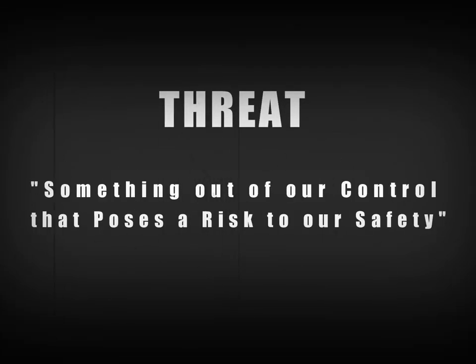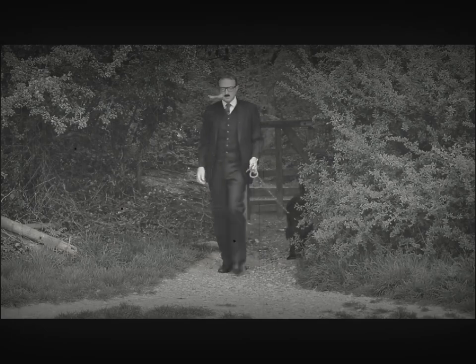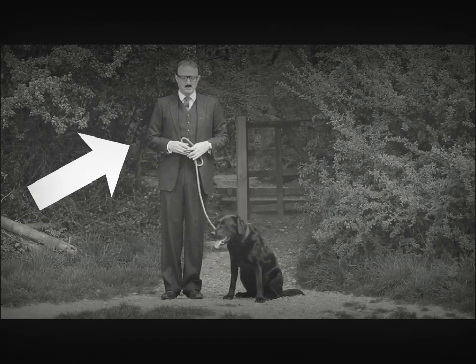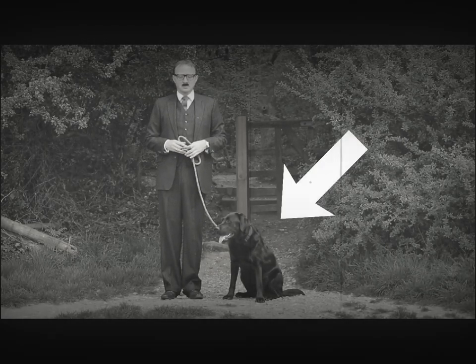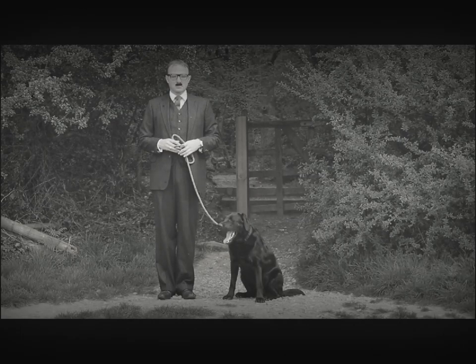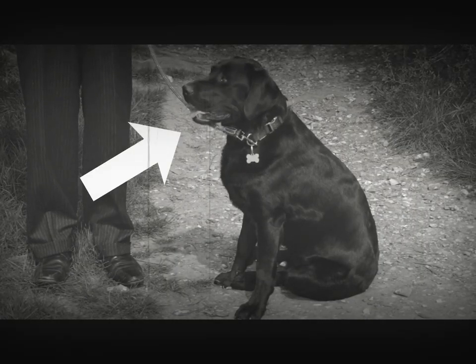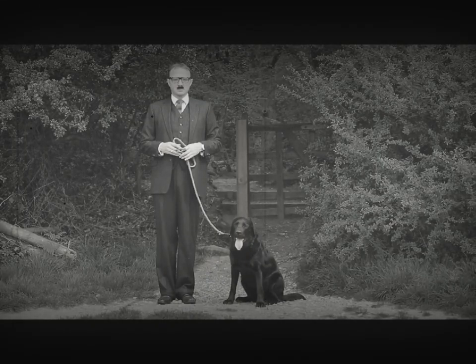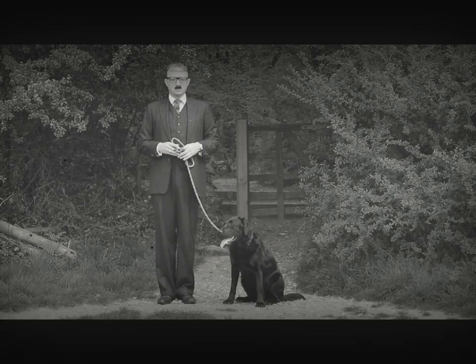But what exactly is a threat? A threat is defined as something out of our control that poses a risk to our safety. To illustrate: this is Bob. And this is Toby. Toby has teeth and claws. Is Toby a threat to Bob? No. Toby is within Bob's control.